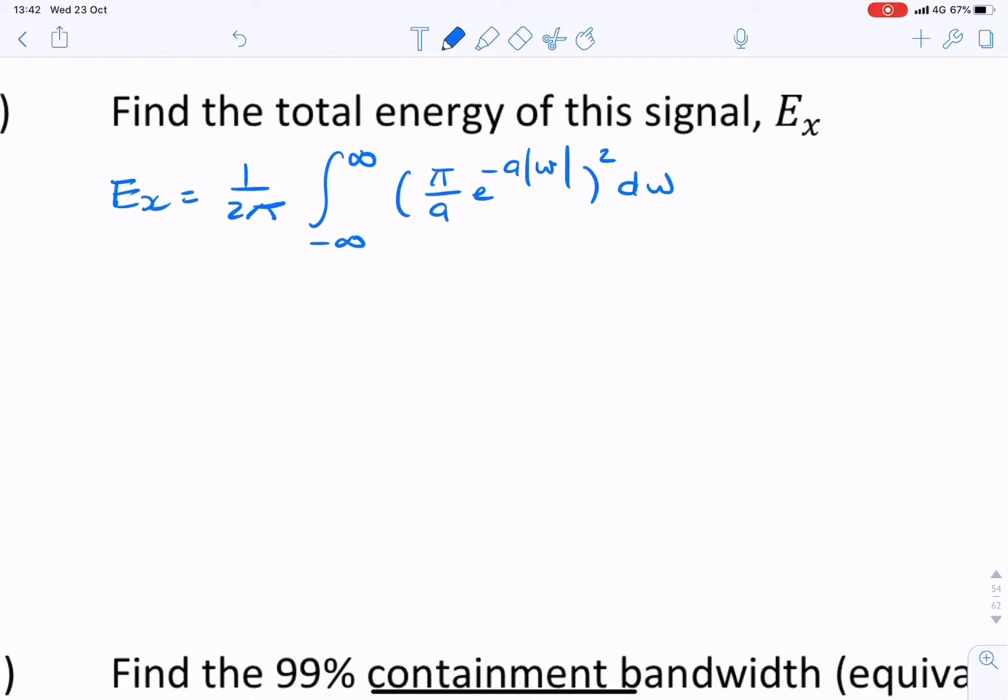The next step is to square that. That's straightforward. Actually, before squaring it, we'd need to separate it out. So we'd need to integrate from minus infinity to 0, and then from 0 to infinity, because we have this absolute value.